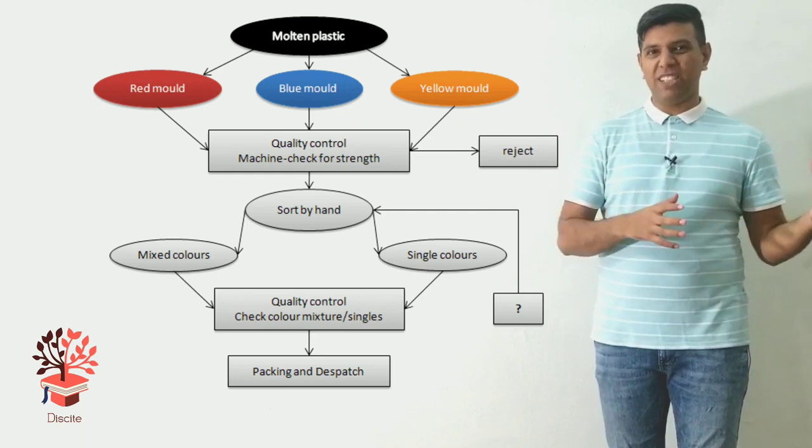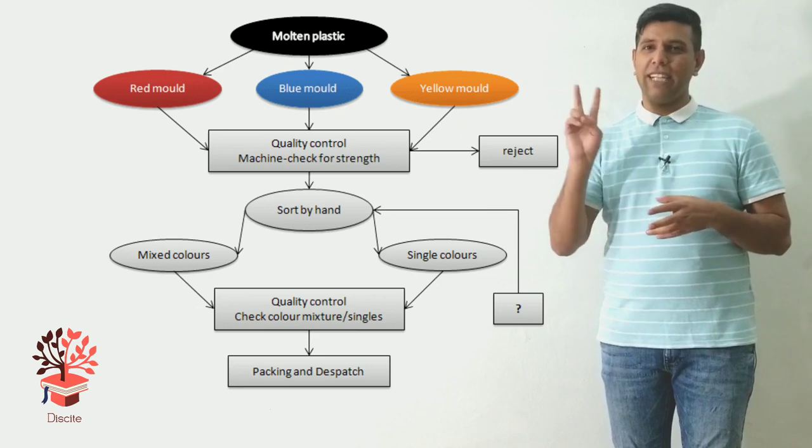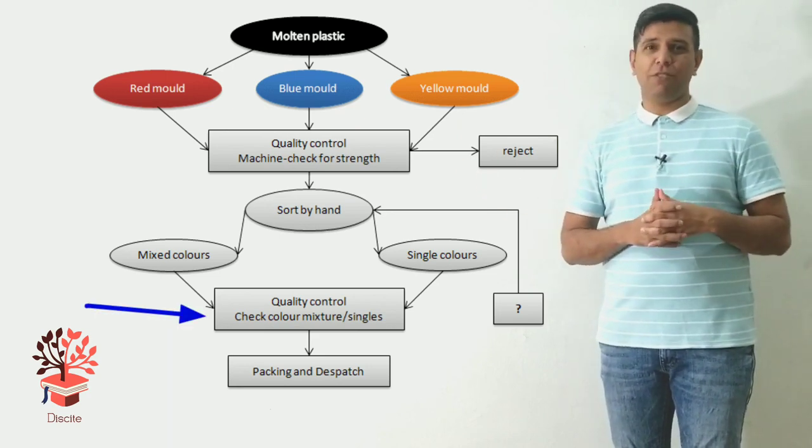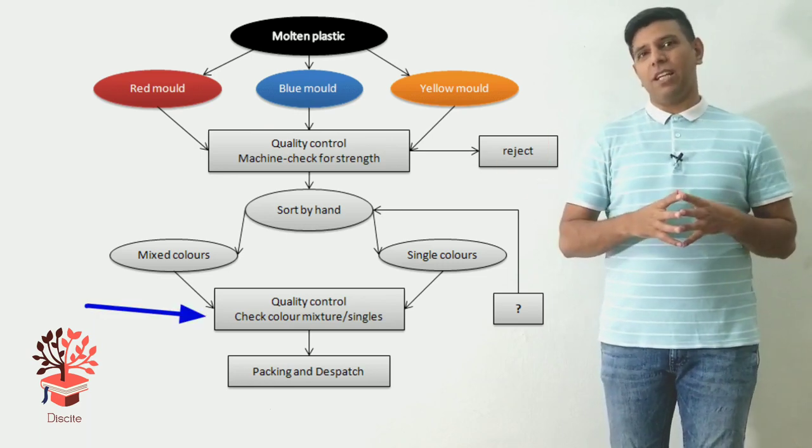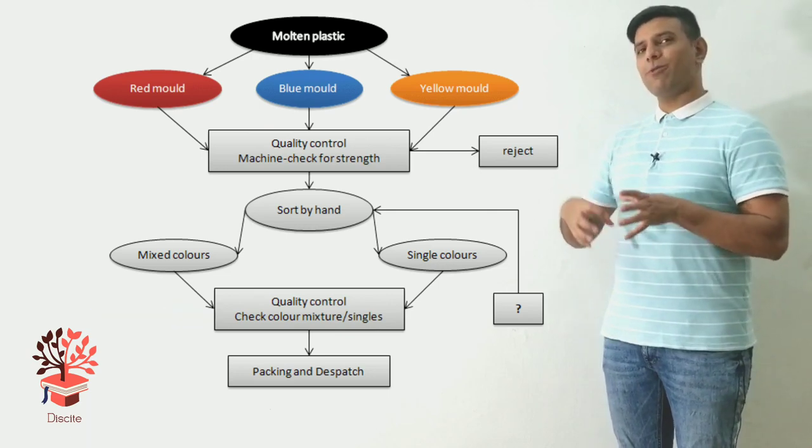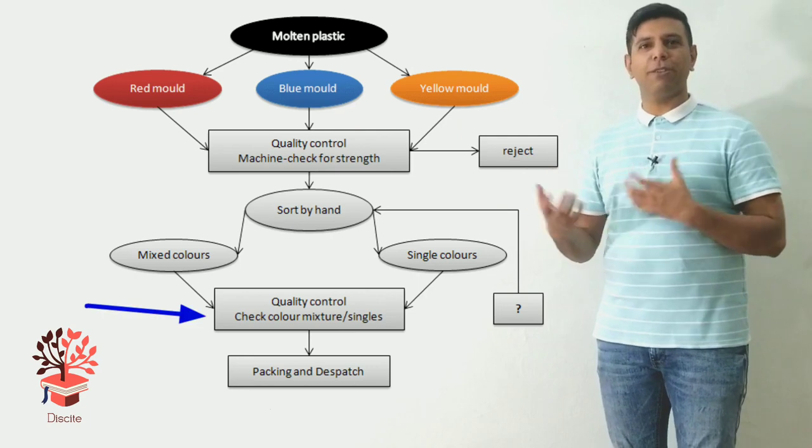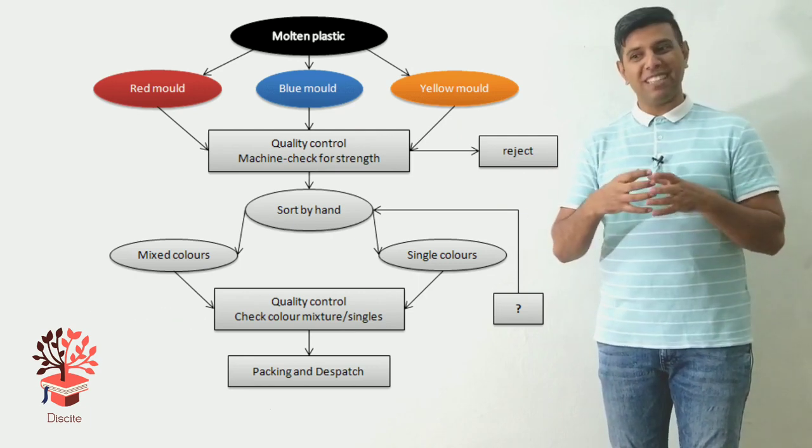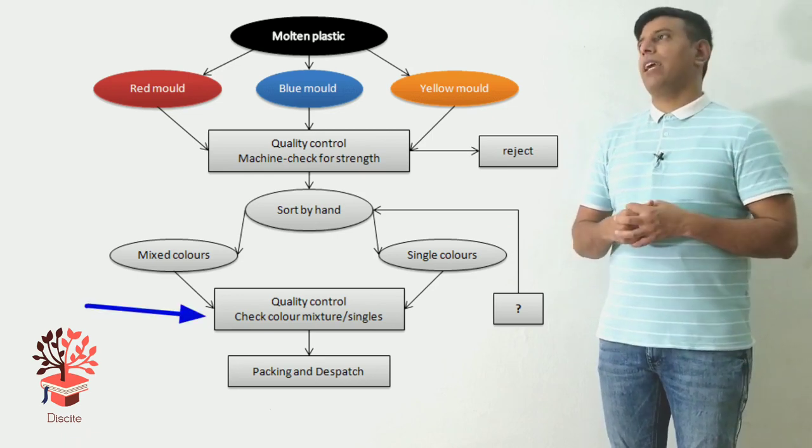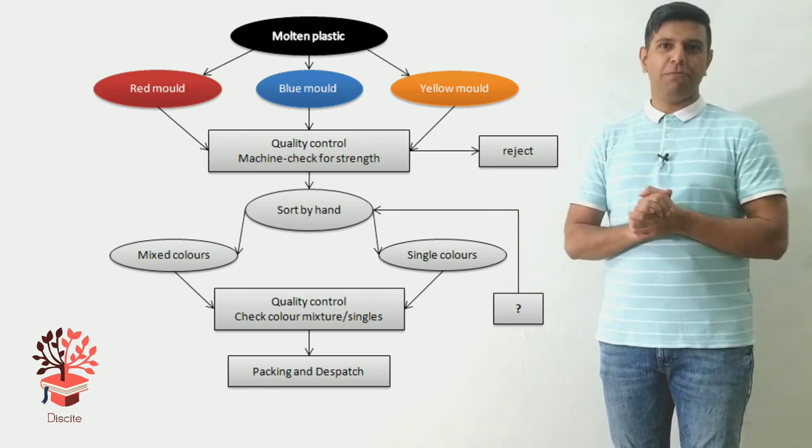After they've been sorted into single coloured and mixed colours ones, there is a quality control again. Second quality control. But this time, they're checking whether they've been sorted out or classified properly into single coloured and mixed colours or not. So this time we're not looking for the internal quality of the product. We're looking for aesthetics, the external beauty or the colours of it. And who is doing it? Not given. So we're not going to be bothered by that.